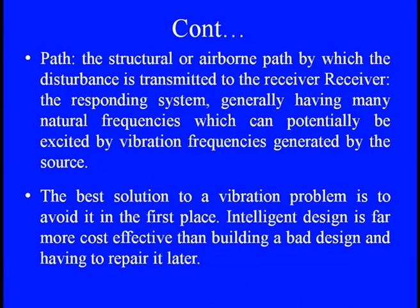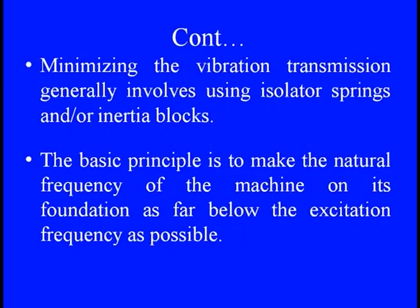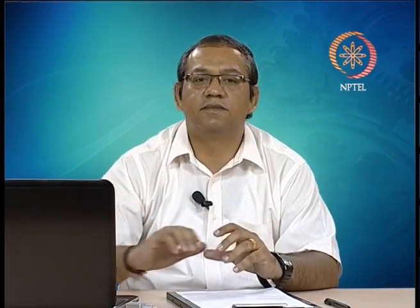When vibration is unavoidable, minimizing transmission generally involves isolator springs or inertia blocks to deviate the transmission path. The basic principle is to make the natural frequency of the machine on its foundation far below the excitation frequency, so that resonance can be avoided. This can be done either by using springs or by inertia blocks. There are four configurations: a machine bolted to a rigid foundation, with a simple spring isolator, with an inertia block and spring, and a fourth involving a seismic mass.